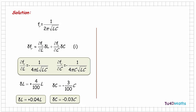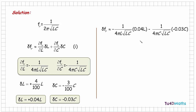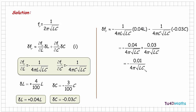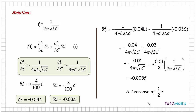Substituting the small changes and the partial derivatives into the total differential equation gives the overall approximate change in the resonant frequency. Rearranging and adding the two terms, we get −0.01 over 4π√(LC). Since the frequency f = 1 over 2π√(LC), we can rewrite this as −0.005 × f, which represents a decrease of 0.5%.